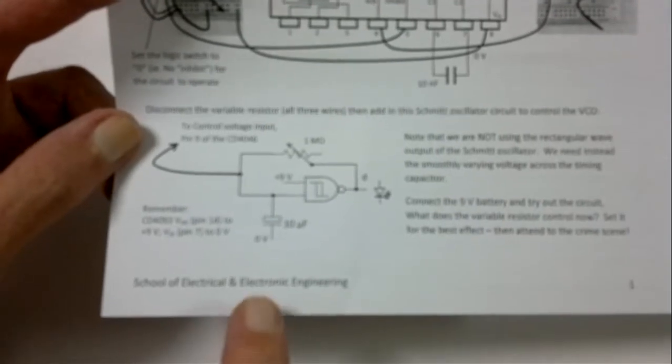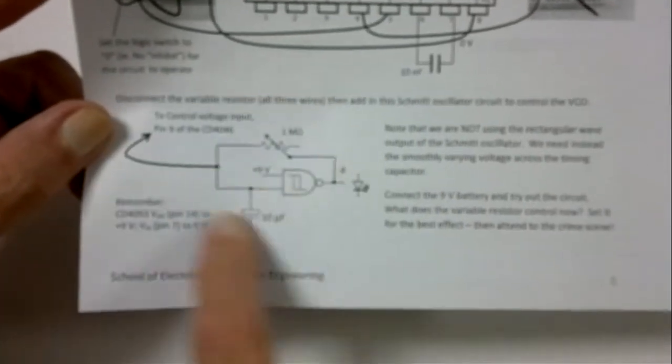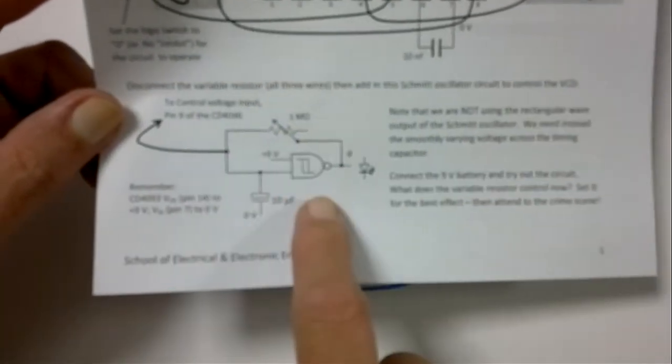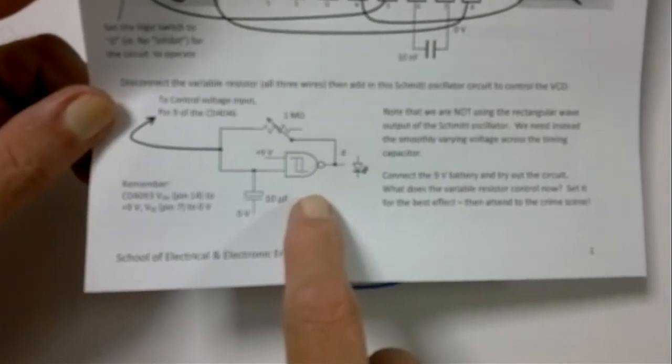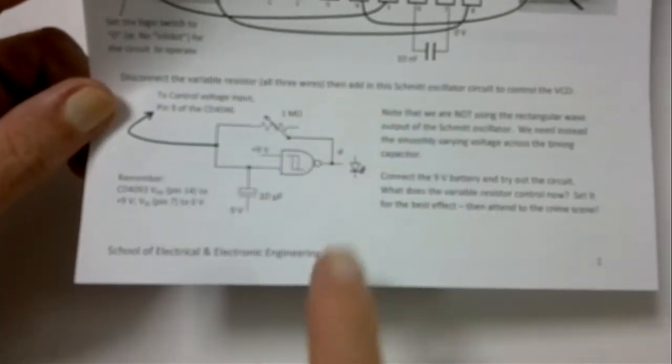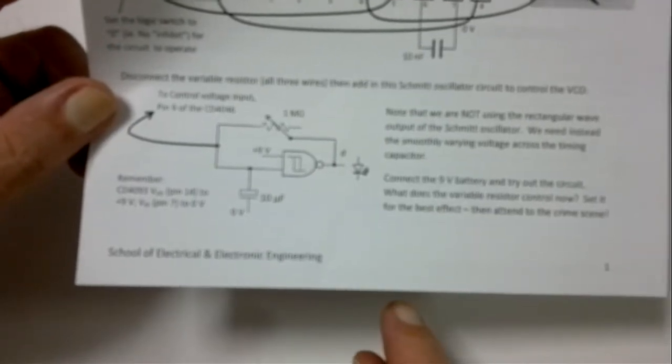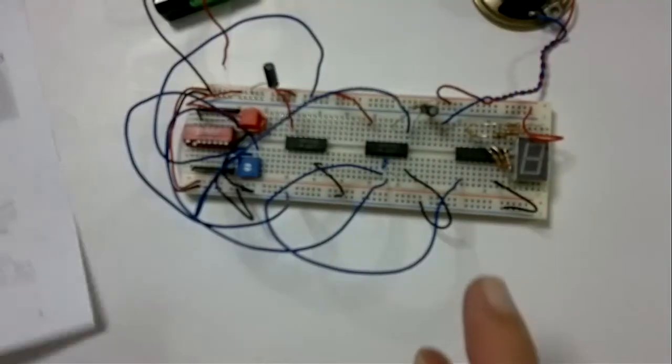So what we can do is make a nice slow oscillator here with a Schmidt trigger oscillator, which you probably know about already, and then we can probably make ourselves a nice little police siren. Let's try it. So we'll just quickly put that together.